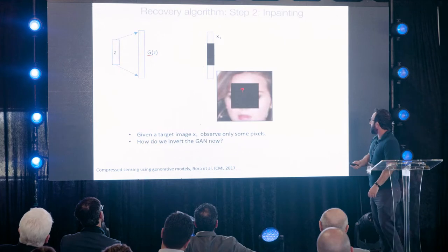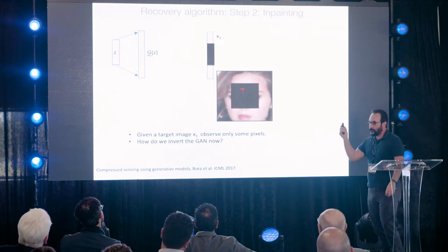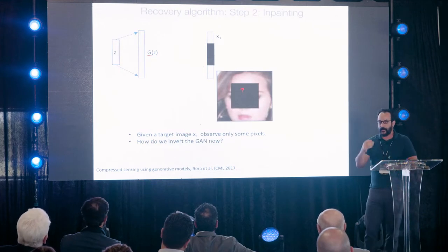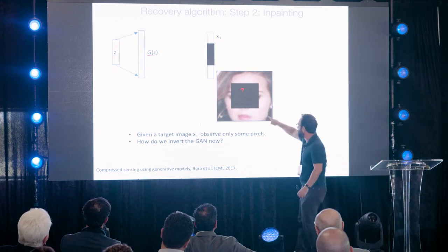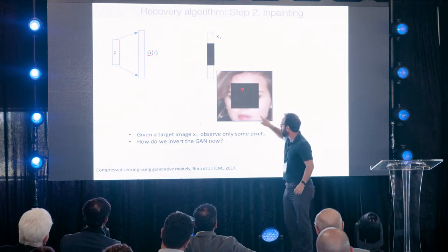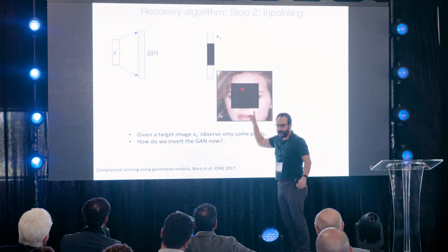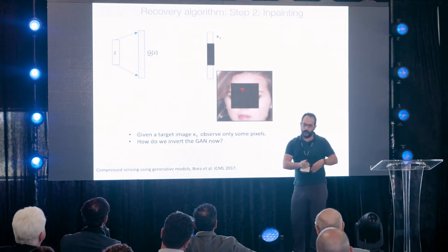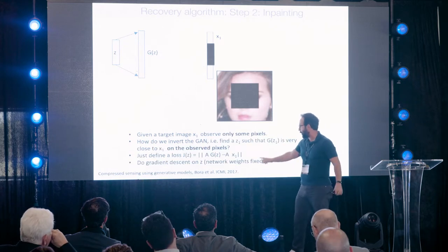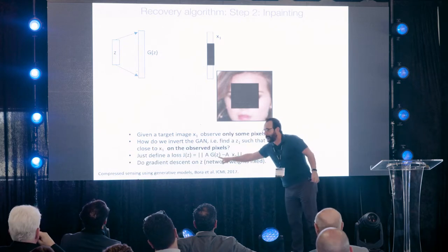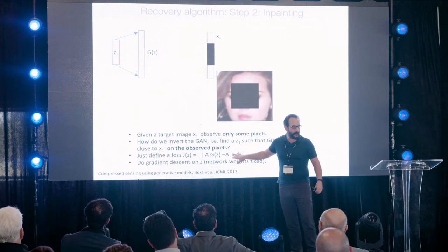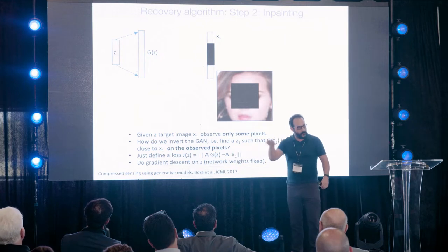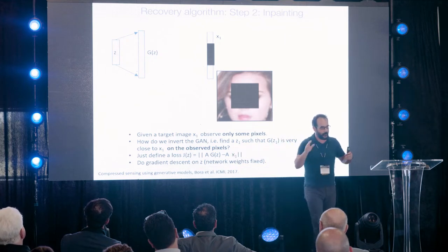For inpainting, you generate an image that agrees not on the missing data but only on the observed boundary pixels. That corresponds to writing a different differentiable loss function. You do gradient descent in Z space, update Z, and reconstruct the person. The mouth may not be perfect, but if someone gives me a better generator tomorrow, I can plug and play.